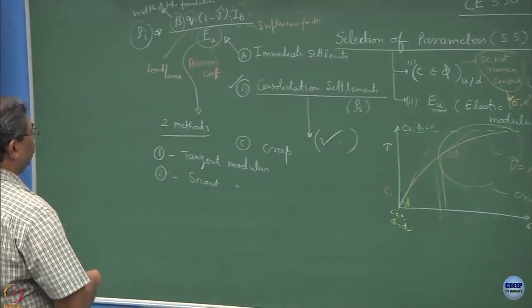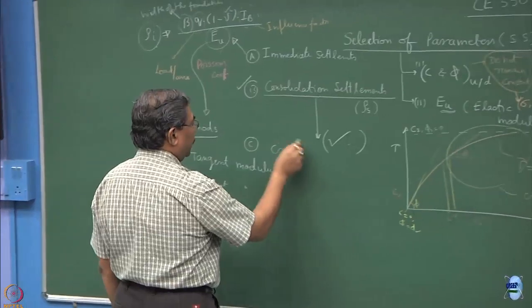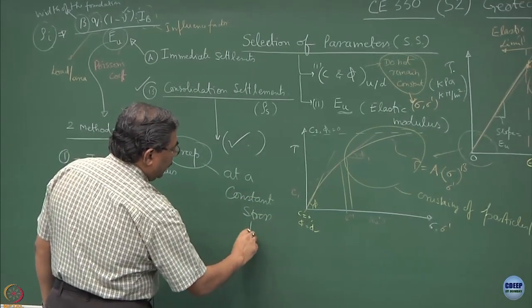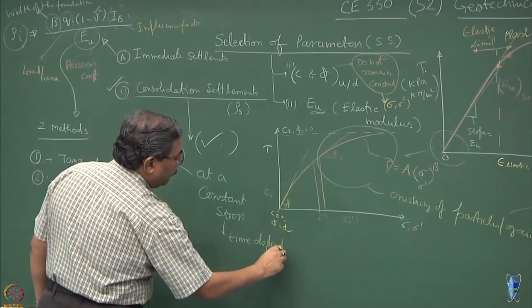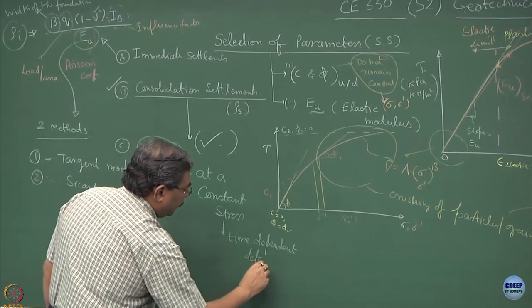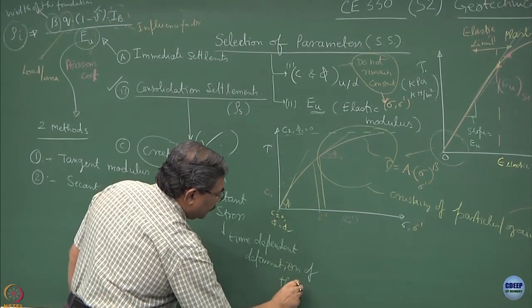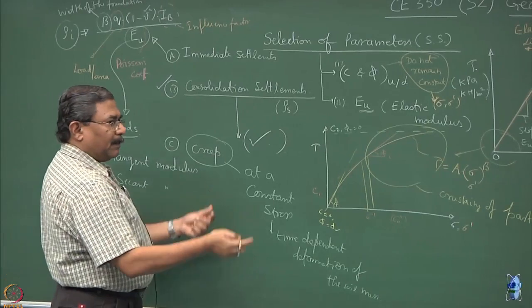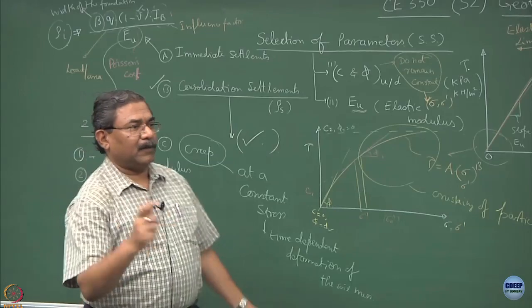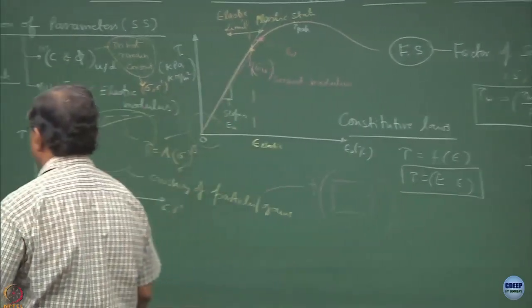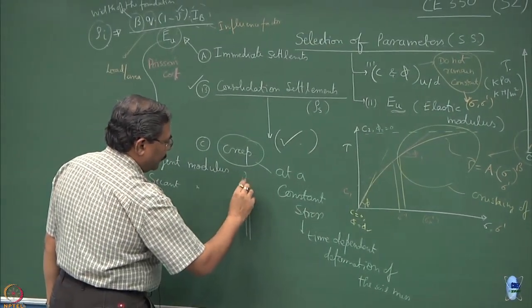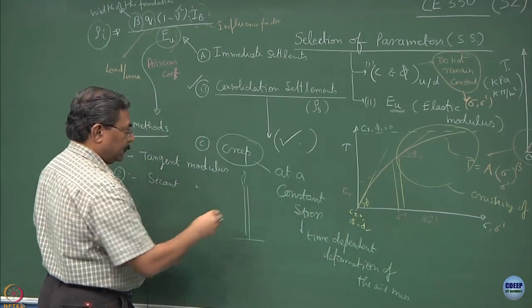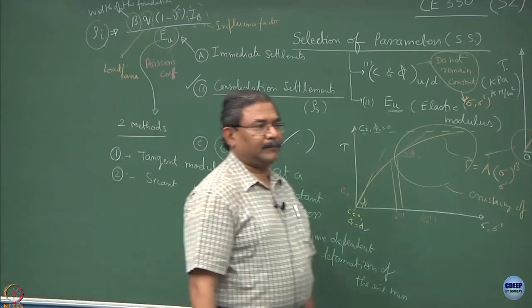Time-dependent consolidation of the materials. So at a constant stress, time-dependent deformation of the soil mass. So the best possible example is you take a candle, put it on a table in a dingy room, forget about it and come after 5 years or 10 years, what happens? Initially the candle would be like this, and then constant stresses, gravity, time-dependent deformation. That is creep.